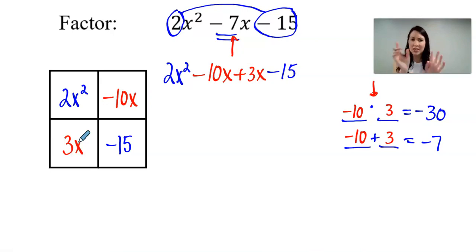Now what I do is I'm looking for a greatest common factor for every single row and every single column. So let's look at our rows first. 2x squared minus 10x. The greatest common factor among those two terms is 2x. Now let's look at the second row. The greatest common factor between 3x and negative 15 is positive 3.